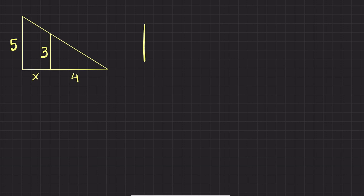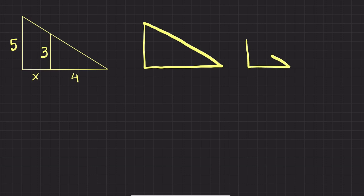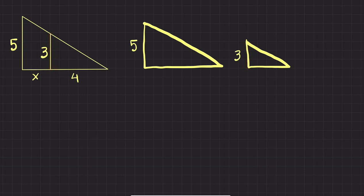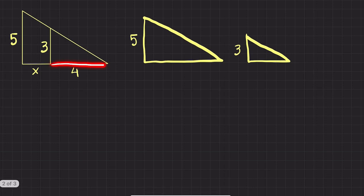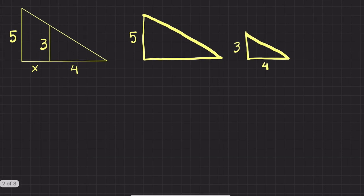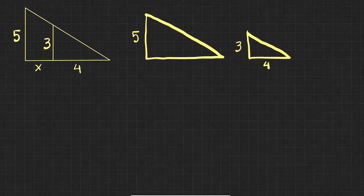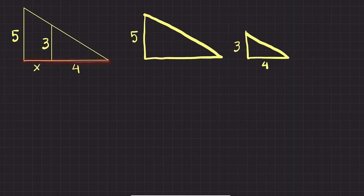Here is the big triangle and here is the small triangle. This side of the big triangle is five. For the small triangle, that corresponding side is three. The base of the small triangle is four.